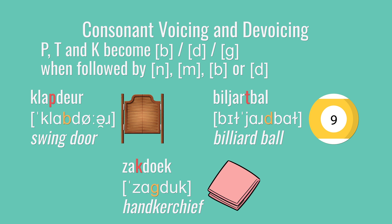Basically, the p, t, or k takes on the voicing from the next consonant. Note that this same unvoiced to voiced consonant transition happens in English too, like in the word backdoor. People generally don't say backdoor. Instead, the k becomes an almost unheard g — it takes on the voicing of the next consonant, backdoor. And just as a reminder, make sure not to overpronounce your consonants in Dutch. It's a very subtle voicing change that happens here. Klapdeur, billiardbal, zakdoek.